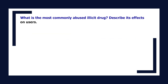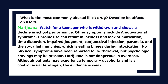What is the most commonly abused illicit drug? Marijuana. Watch for a teenager who is withdrawn and shows a decline in school performance. Other symptoms include amotivational syndrome — chronic use can result in laziness and lack of motivation — time distortion, impaired judgment, conjunctival injection, paranoia, and the so-called munchies (eating binges during intoxication). No physical symptoms have been reported for withdrawal, but psychological cravings may be present. Marijuana is not dangerous in overdose, though patients may experience temporary dysphoria. It is a controversial teratogen, but the evidence is weak.